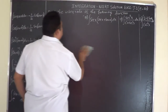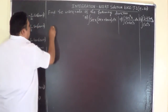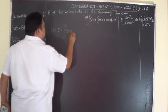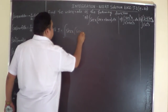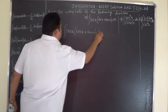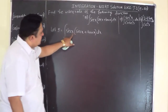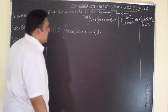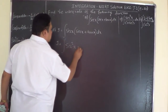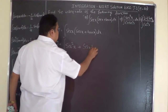Problem 18: let I be equal to integral of secant x times (secant x plus tan x) dx. Since secant x is outside the bracket, multiply through: I equals integral of secant squared x plus secant x tan x, dx.